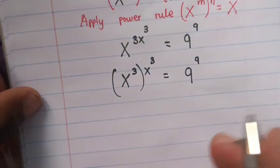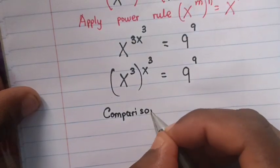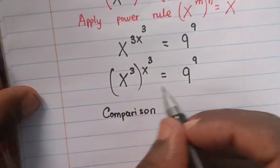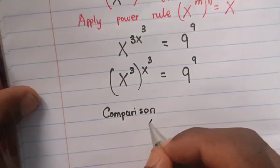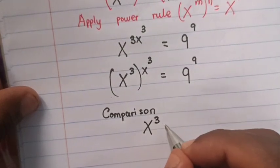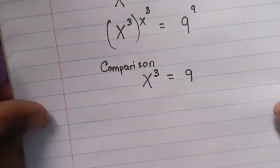Then after we compare from left side and right side, x power 3 we compare with 9 and x power 3 in the power we compare with power of 9. So x power 3 equals 9.